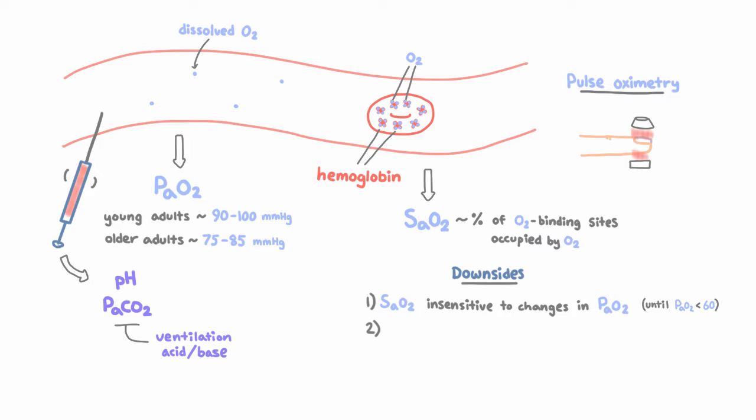Number two, you can't assess either ventilation or acid-base balance with SAO2, because the pH and PaCO2 are not measured. So a patient could develop significant hypercarbia or acidemia and keep a totally normal SAO2, especially when supplemental oxygen is used and offsets the hypoxemia due to hypoventilation.